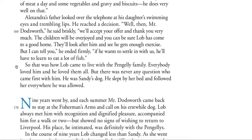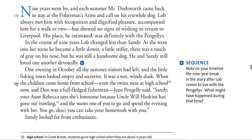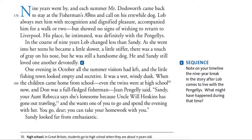So that was how Lob came to live with the Pengelly family. Everybody loved him, and he loved them all. But there was never any question who came first with him. He was Sandy's dog. He slept by her bed and followed her everywhere he was allowed. Nine years went by, and each summer Mr. Doddsworth came back to stay at the Fisherman's Arms and call on his erstwhile dog, Lob. Lob always met him with recognition and dignified pleasure, accompanied him for a walk or two, but showed no signs of wishing to return to Liverpool. His place, he intimated, was definitely with the Pengellys. In the course of nine years, Lob changed less than Sandy. As she went into her teens, he became a little slower, a little stiffer. There was a touch of gray on his nose, but he was still a handsome dog. He and Sandy still loved one another devotedly.